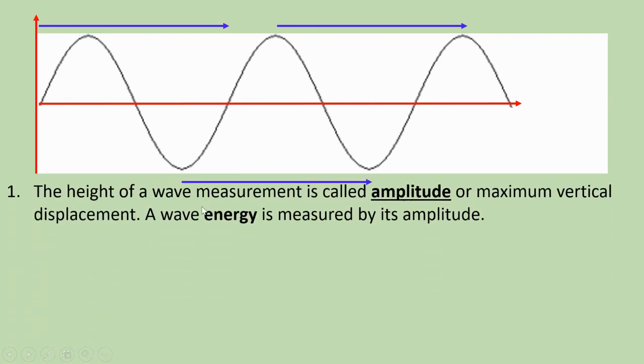The height of a wave measurement is called amplitude, or maximum vertical displacement. Here it will depend on the angle of the release of the pendulum.